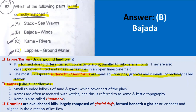Kames are a glacial landform — small rounded hillocks of sand and gravel which cover part of the plain, also called Hummocks. Kames are often associated with kettles, referred to as Kame and kettle topography. Drumlins are oval-shaped hills largely composed of glacial drift, formed beneath a glacier or ice sheet, and aligned in the direction of ice flow. So both Kame and Drumlins are glacial landforms, while Lapies and Karren are underground landforms in karst topography.